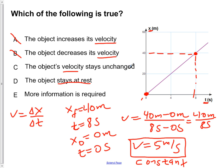Choice C says, velocity stays unchanged. This is true. Our velocity is constant. It's not going to be changing as it's moving along.